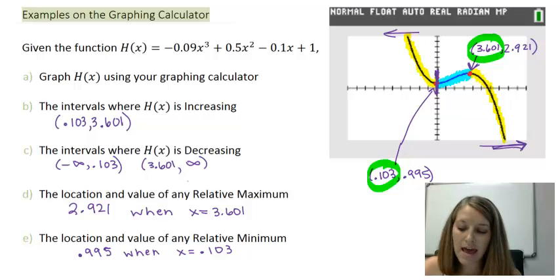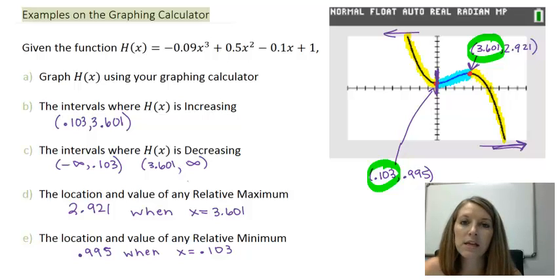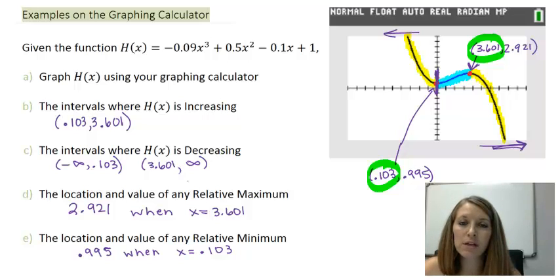We have just utilized our graphing calculator to help us analyze the graph. This ends the examples of analyzing graphs with increasing, decreasing, constant, maximum, and minimum. Thank you.